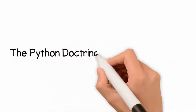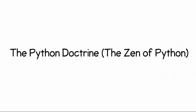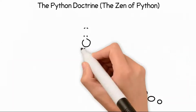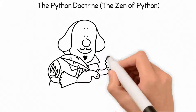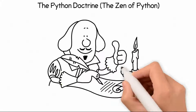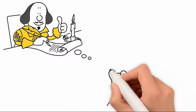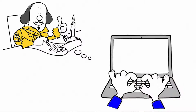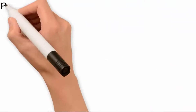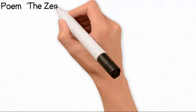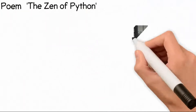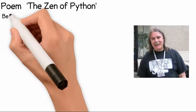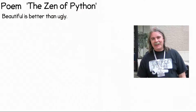The Python Doctrine: the Zen of Python. A major contributing developer of Python, who goes by the name Tim Peters, wrote a poem to list out the doctrine and philosophies of Python, which can be accessed by typing the code 'import this' into the Python IDLE. The poem is known as The Zen of Python, by Tim Peters.